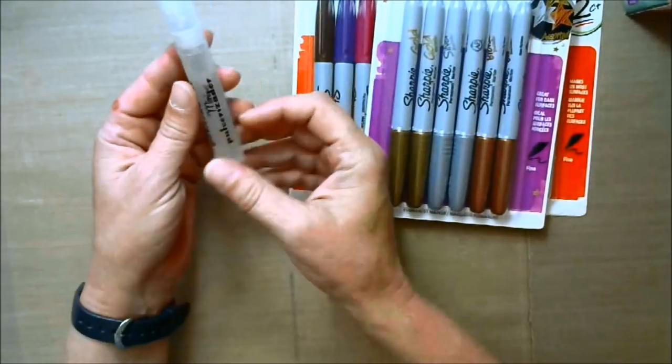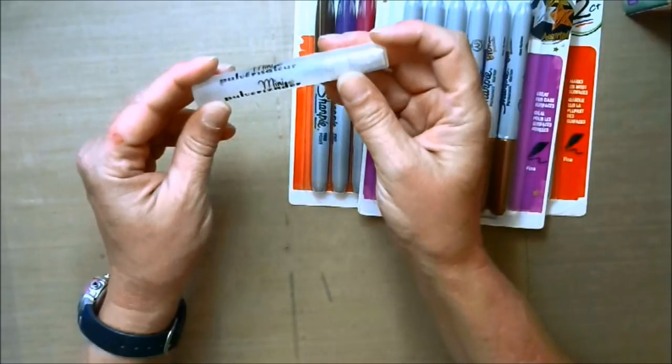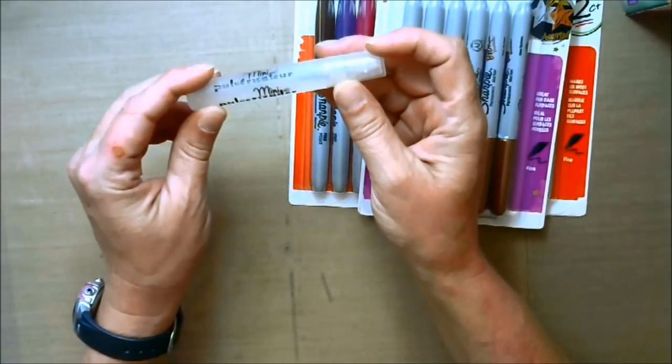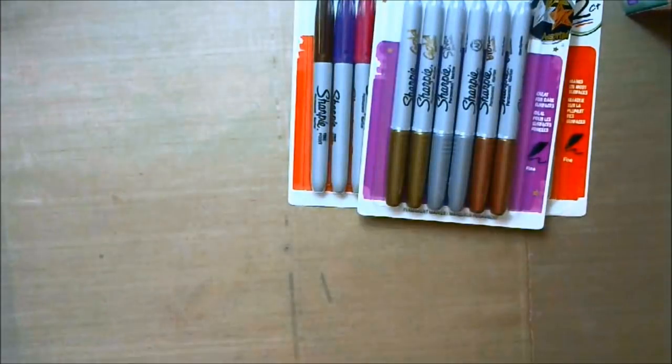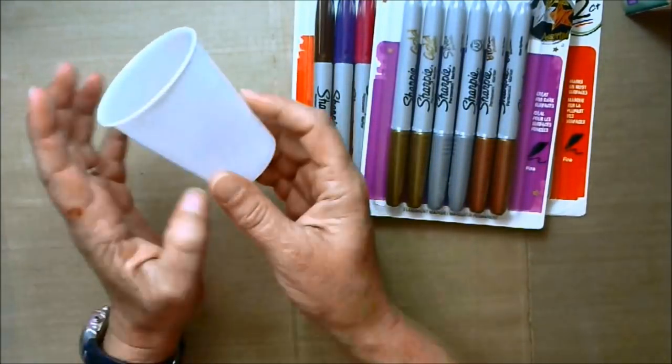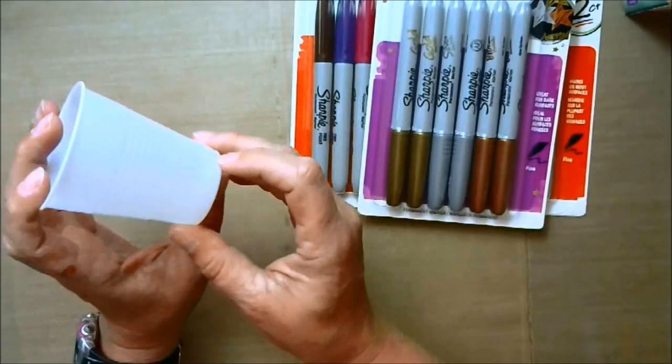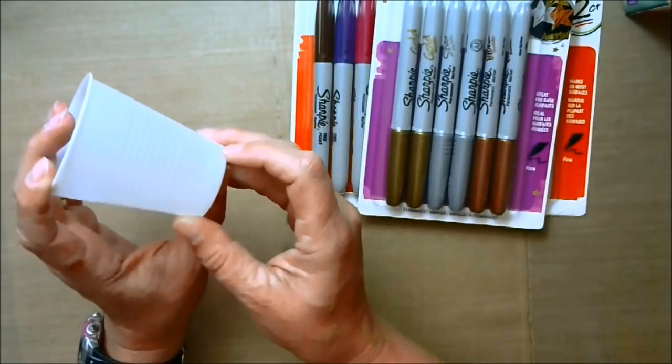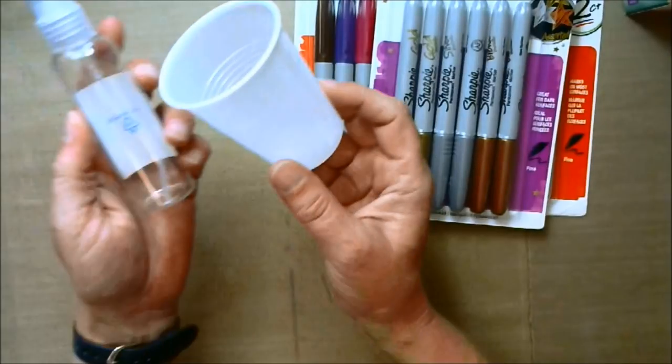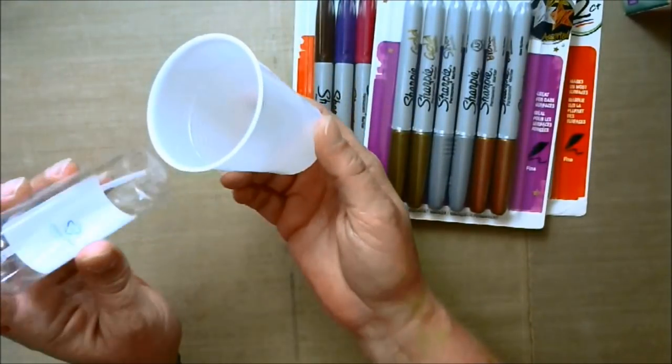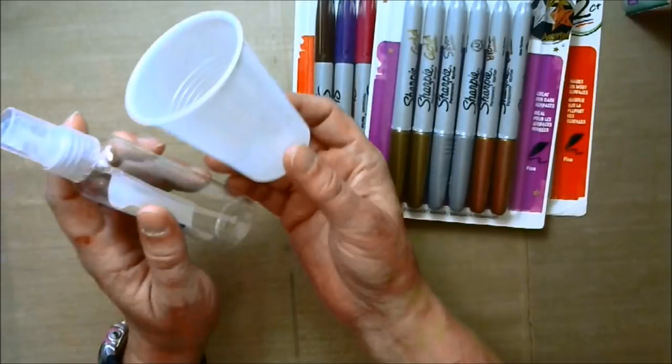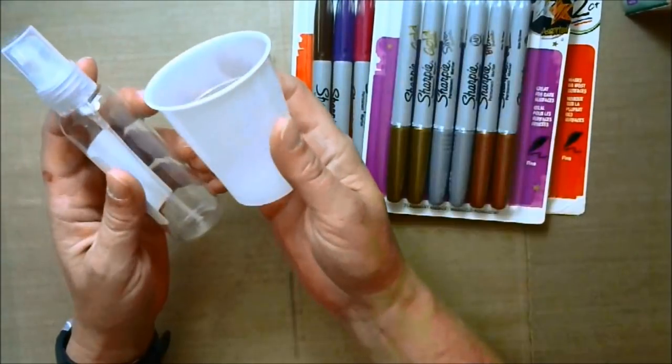I have a mini mister here filled with alcohol and I'm gonna use that for cleaning purposes as I go along. A Dixie Cup, this is about a five ounce Dixie Cup and the tubes we're gonna be using are two ounces, so this gives us plenty of room to soak our guts from our Sharpies in here.